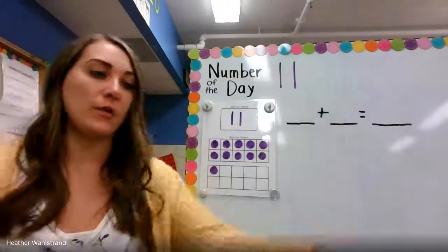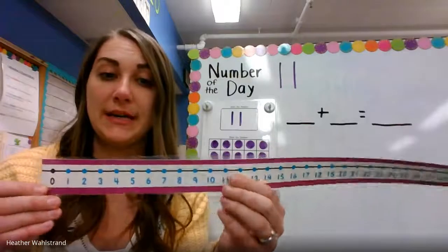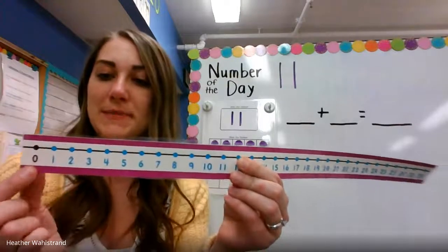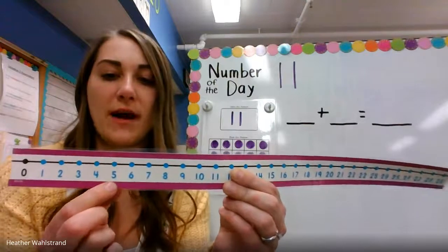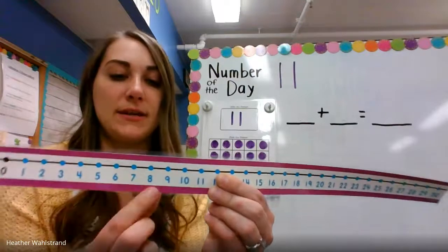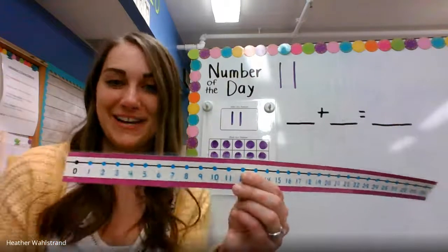Let's take a peek at our number line, and we're going to practice counting to 11. Here we go. Count with me. Zero, one, two, three, four, five, six, seven, eight, nine, ten, eleven. Great job counting.